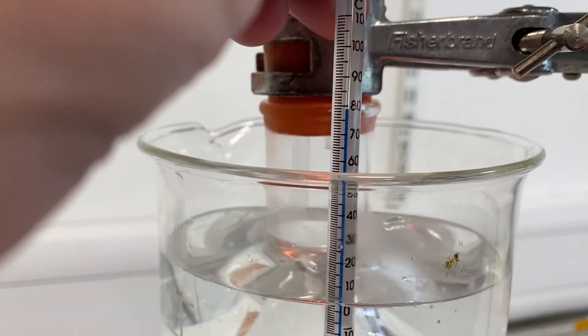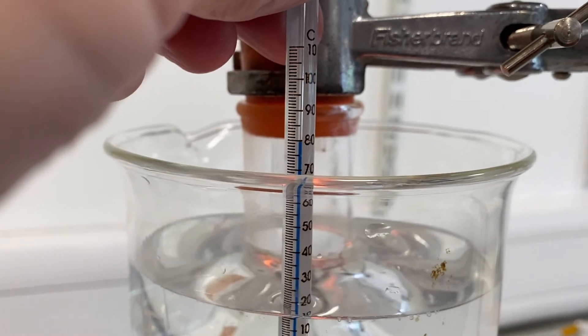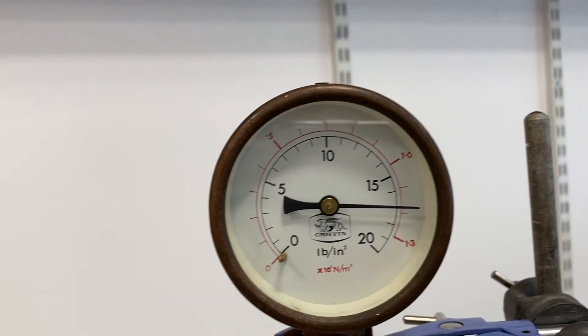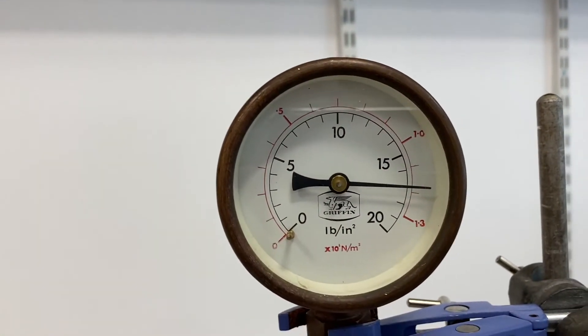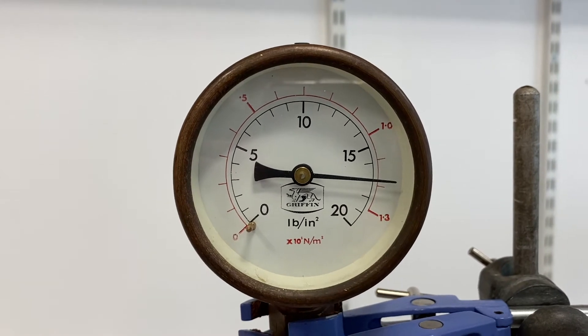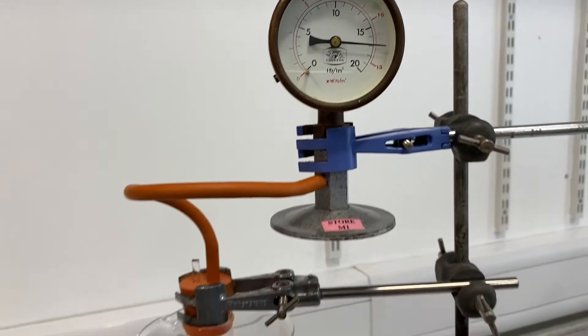And the last one then, 80 degrees. I don't want to go any more than that because we don't want the water boiling, so at 80 degrees the pressure is, let's tap again, and I reckon we're at 1.18 times 10 to the 5 newtons per square metre.